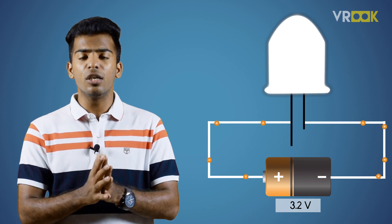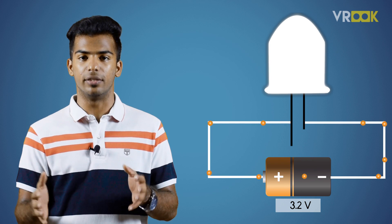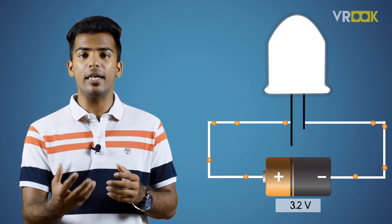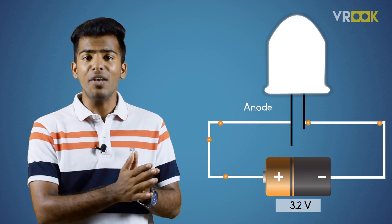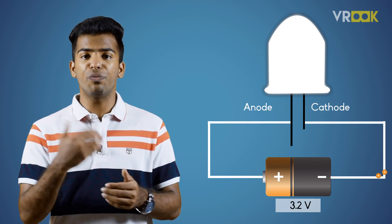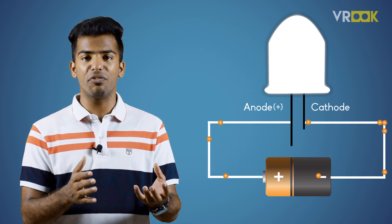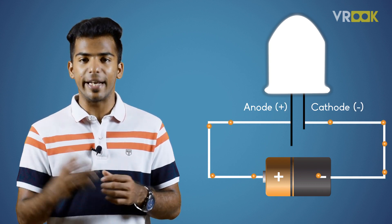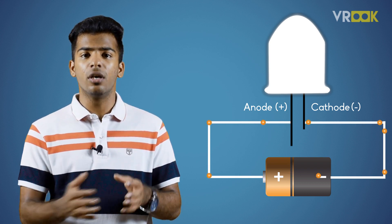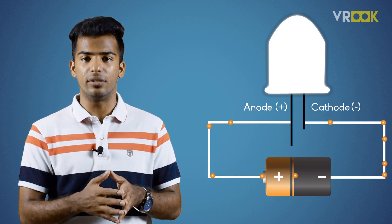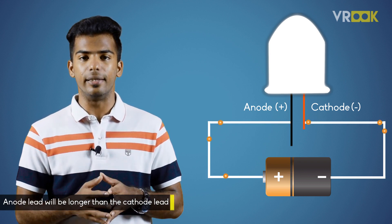LEDs should be properly connected with their positive and negative ends because they only conduct current in one direction. LEDs have anode and cathode leads which we use to connect them in the circuit. The anode is the positive end and the cathode is the negative end. We can identify the anode and cathode leads by looking at the length of the leads — the anode lead will be longer than the cathode lead.